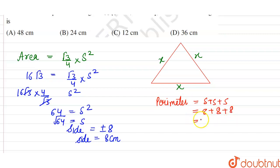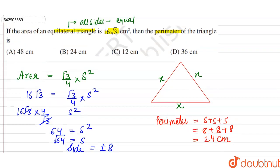8 + 8 is 16, 16 + 8 is 24 centimeters. So the perimeter of the given triangle is 24 centimeters, and the correct option is option B.